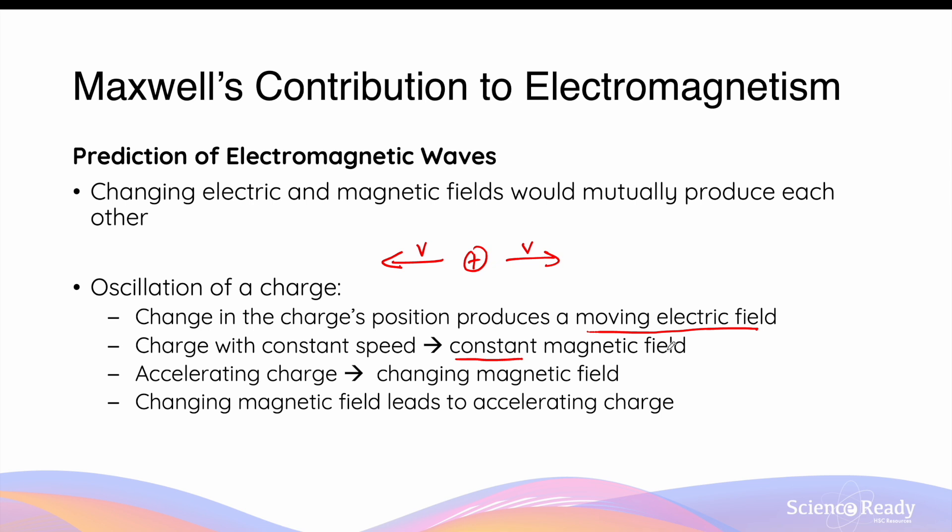Now, if this charge is moving back and forth or oscillating with acceleration, then the magnetic field produced will also be changing in magnitude. As the charge is moving faster, the magnitude of the magnetic field will also increase, and vice versa. So when a charge oscillates back and forth with acceleration, it will be able to produce a changing electric field and a changing magnetic field.